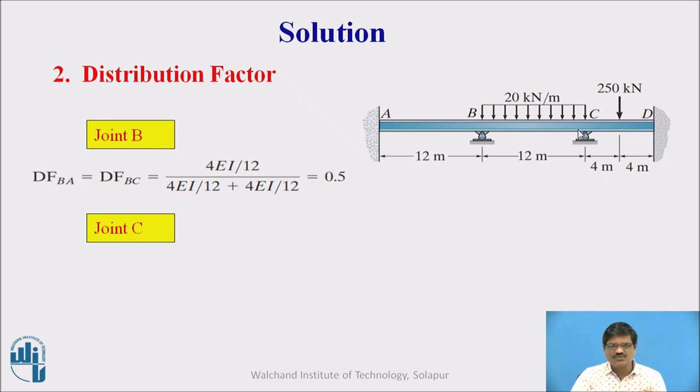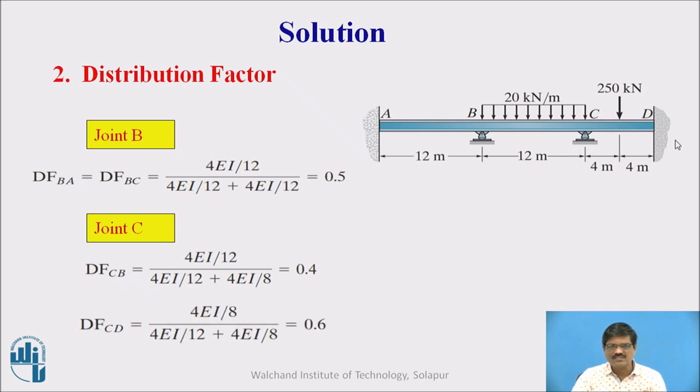For C also we can determine the distribution factor CB. Stiffness of CB divided by stiffness of joint C now, the denominator here. It comes out to be 0.4, and for CD it comes out to be 0.6.